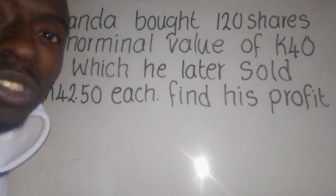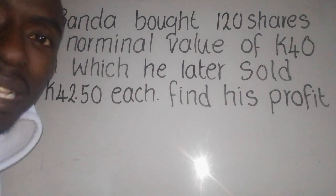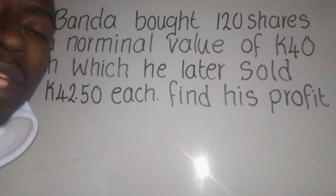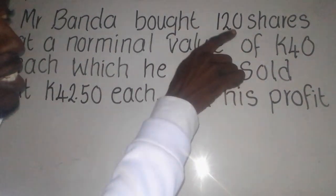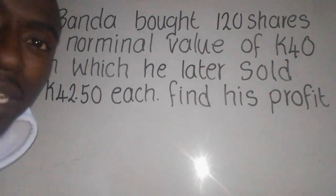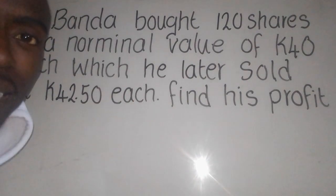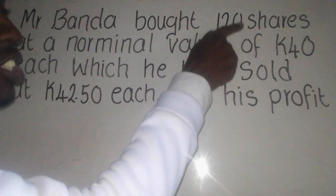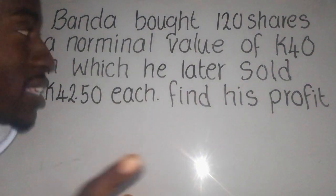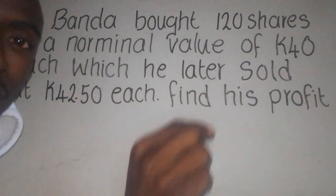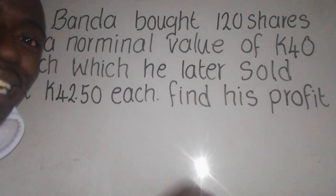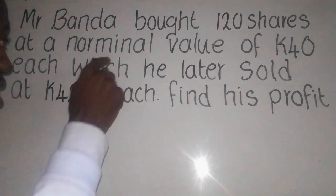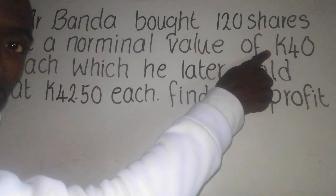We are talking about social and commercial arithmetic, which involves calculations in business. When they say shares, it simply means the product which the company is selling. Mr. Banda bought 120 shares from the company. When they say nominal value, it is the price at which the company has declared their product — in this case, 40 quarter.